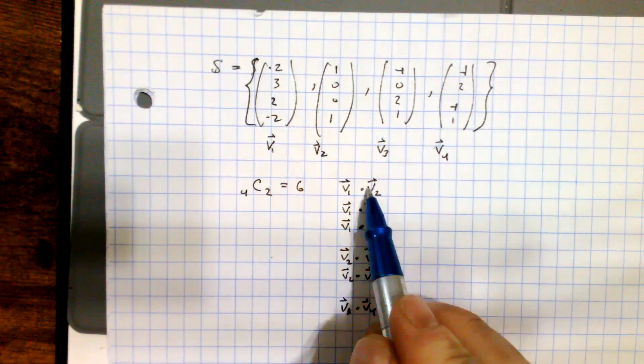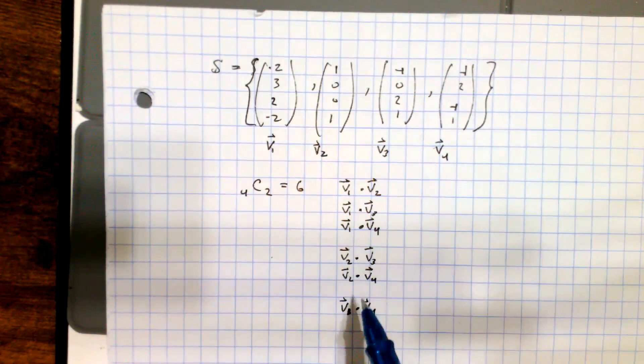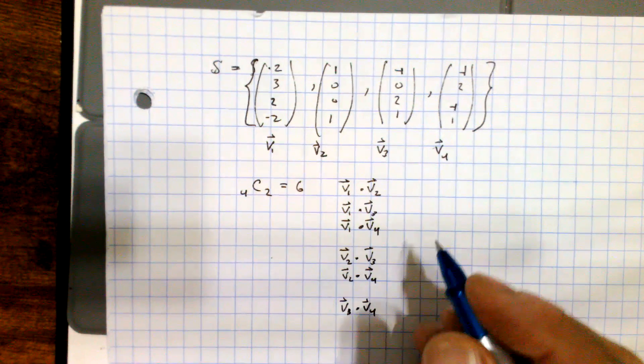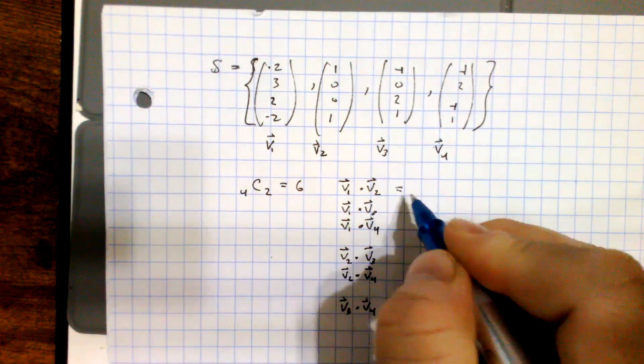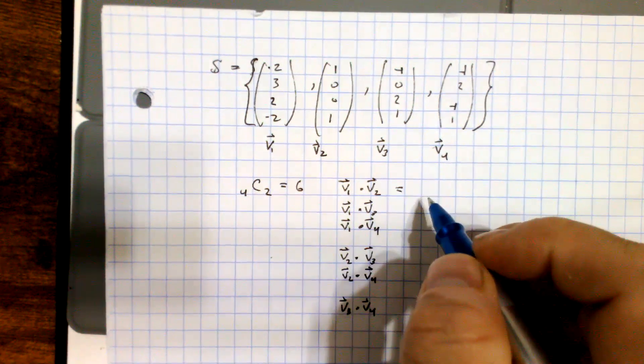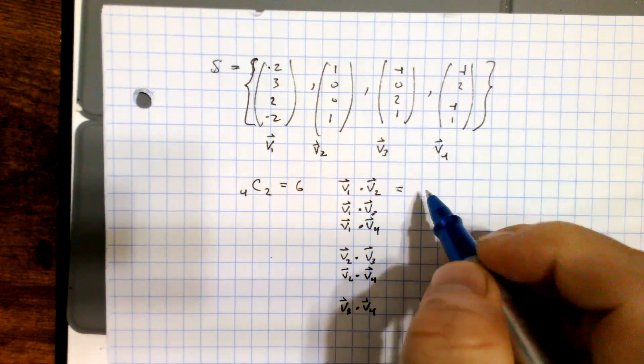So you can see there's the three, four, five, and then six. So those are the six dot products that I need to check. And so these are just the standard inner product or dot product for vectors, so you multiply components and add together.